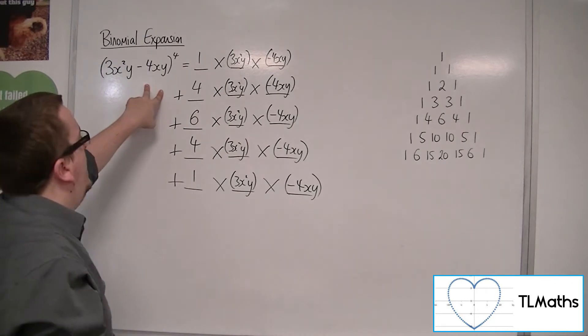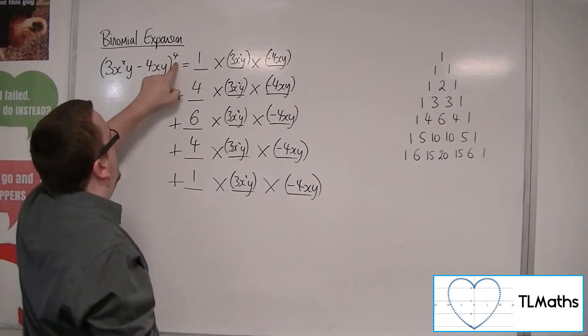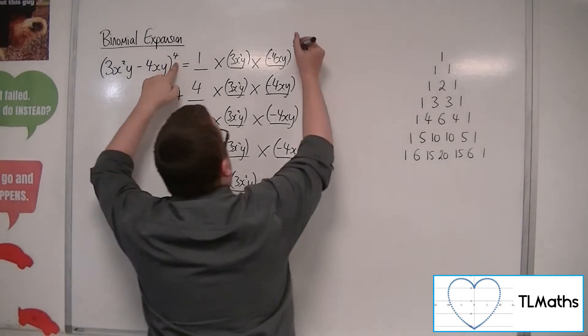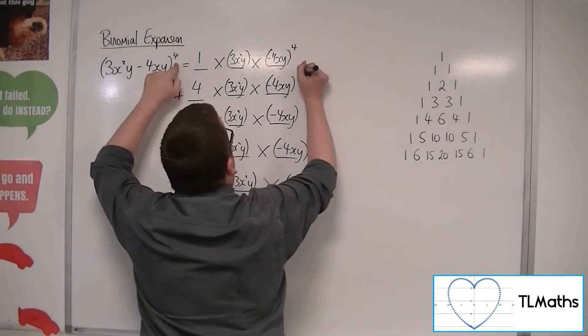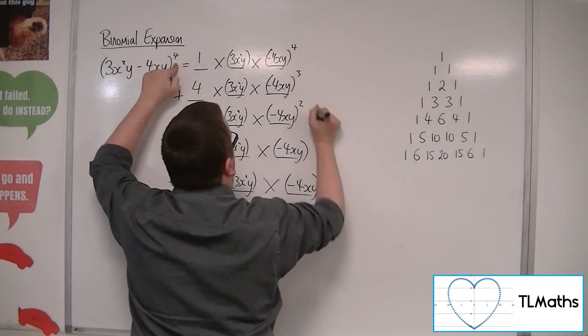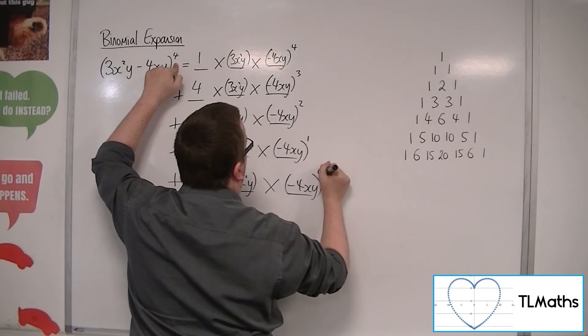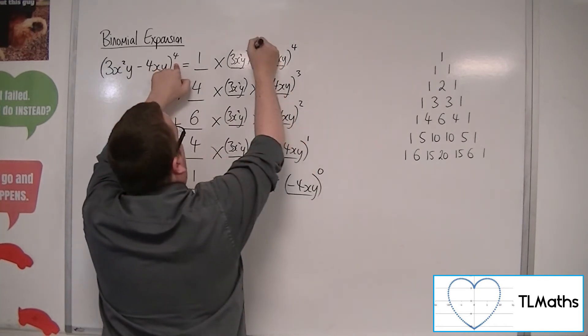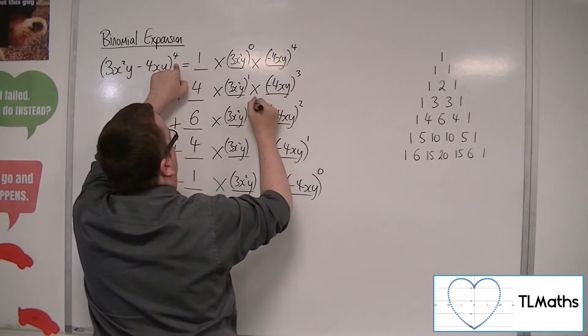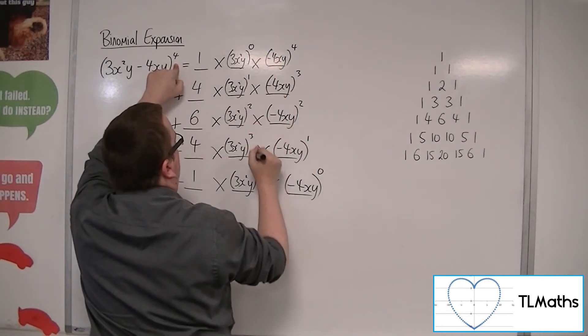Then we're going with 4, 3, 2, 1, 0 and 0, 1, 2, 3, 4 for the powers.